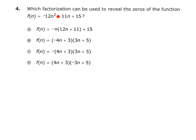Now when it says which factorization can be used to reveal the zeros, it's saying which factorization if I took this f(n) and changed it to equal zero. In other words, if I had negative 12n squared minus 11n plus 15 and I set it equal to zero, how would I solve this by factoring? That's what it's asking.